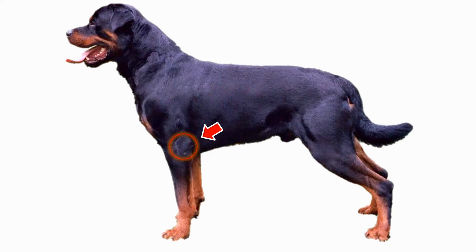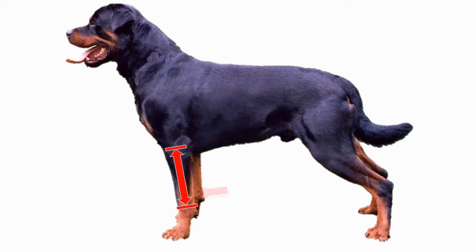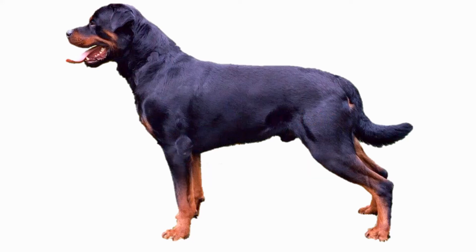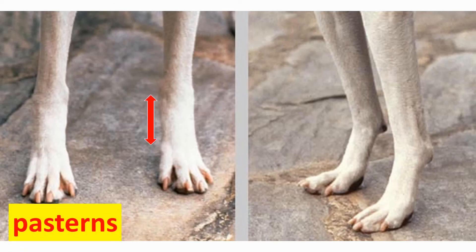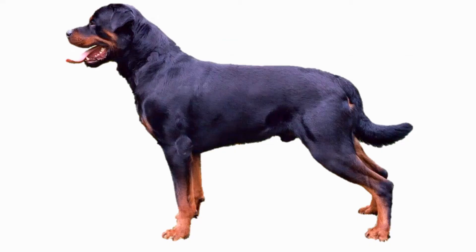Elbow joint. Forearm — the forearm starts from the elbow joint and ends at the wrist joint. The wrist joint, or carpus, is the joint below the elbow. Pasterns are equivalent to the bones in your hands and feet, not counting fingers and toes. The front pastern is right here.